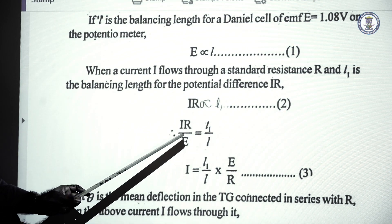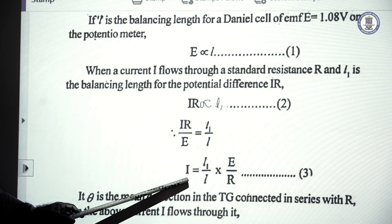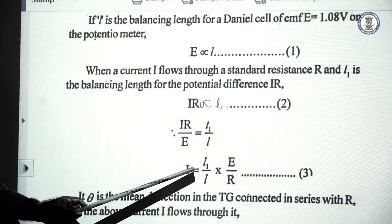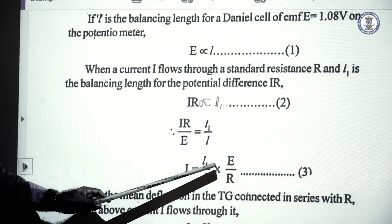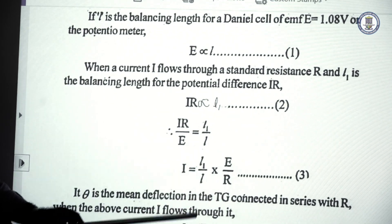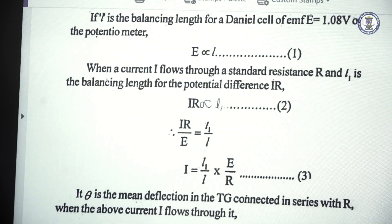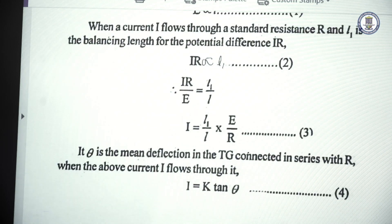From that we can obtain the current I in the potentiometer secondary circuit: I is equal to L1 by L into E by R, or E·L1 divided by R·L.